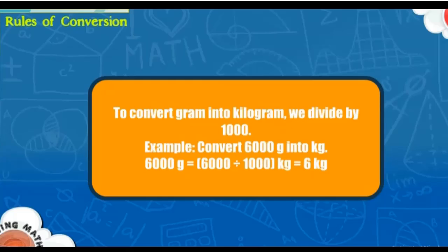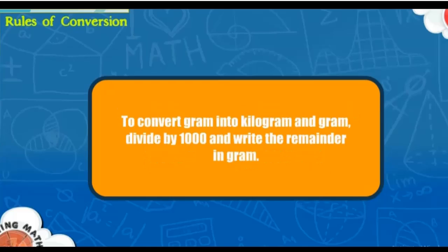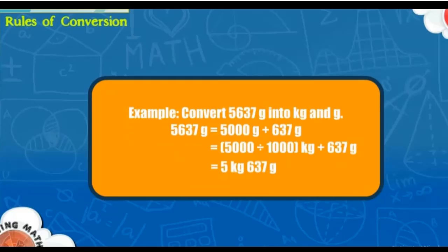To convert grams into kilograms, divide by 1000. To convert grams into kilograms and grams, divide by 1000 to get the kilogram part and the remainder is the grams. For example, 5637 grams equals 5 kilograms and 637 grams.